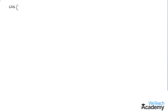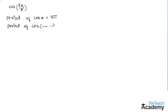We have to find the period of the trigonometric function cos(2x/3). We already know that the period of cos x is 2π, and the period of cos(ax + b) is 2π divided by |a|. This function is in the form of ax, so comparing cos(ax + b) with cos(2x/3), we get a equal to 2/3.